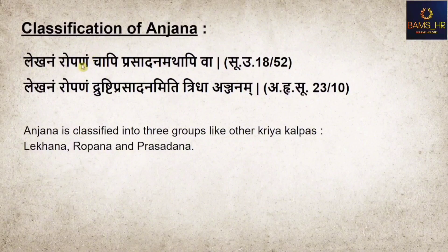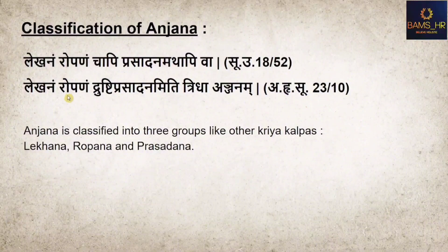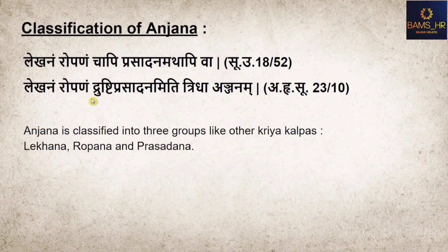Classification of Anjana: According to Sushrita Uttaratantra, Anjana is classified into three groups — Lekhan, Ropan, and Prasadhana. Ashtangaradha Sutrasthana written by Vruddha Vagbhata also classifies as Lekhan, Ropan, and Prasadhana — adding Rusti Prasadhana and Mithi Tritanjanam. So the Anjana is classified into three main groups: Lekhanam, Ropanam, and Prasadhana.